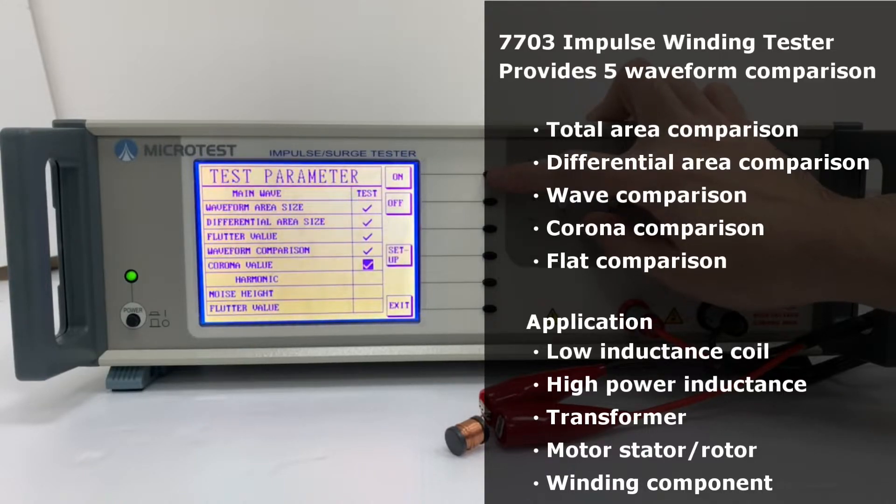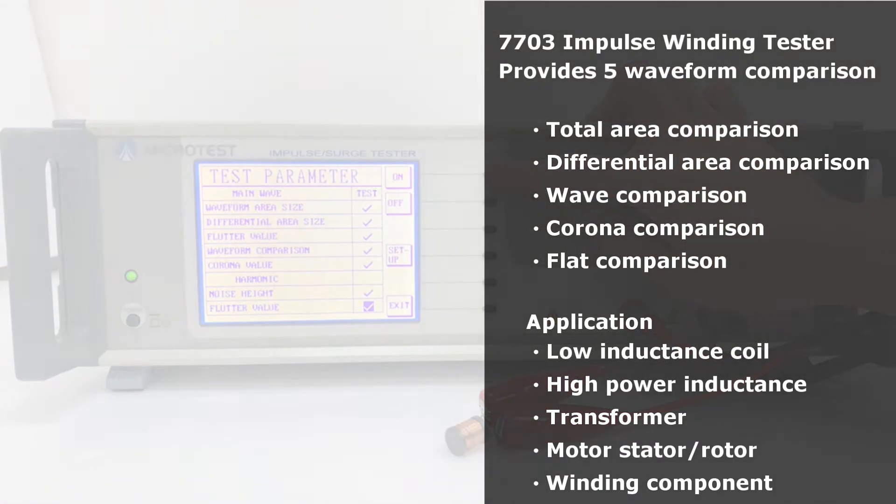7703 provides 5 waveform comparison methods: Total Area Comparison, Differential Area Comparison, Wave Comparison, Corona Comparison, and Flat Comparison.